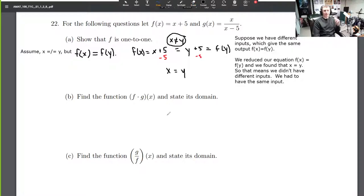Here we go. Part b, find the function f times g and state its domain. All right, f times g, not so bad. Here we go. x plus 5, that's f(x), times g. g is x over x minus 5. So this is x times x plus 5 over x minus 5. Done. That's f times g of x. You take f and you multiply it by g.